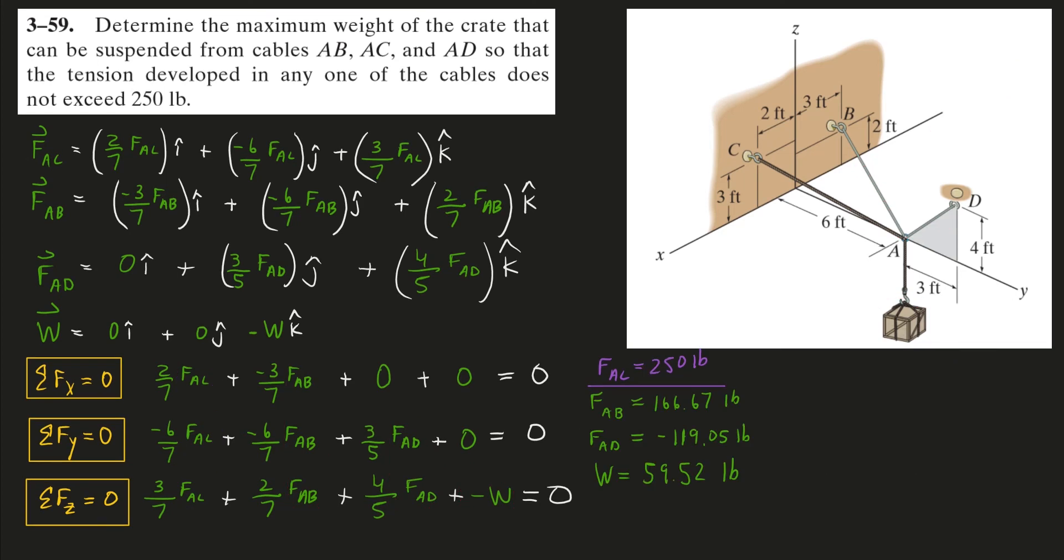If I run that math and solve my unknowns, I get 166.67 for the force in AB. That's okay. I get negative 119 pounds for the force in AD. Something's definitely not right there. That negative means that instead of this force acting this way, it's really acting this way, which is impossible.